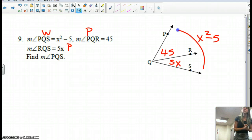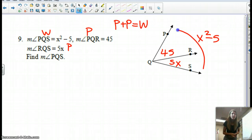So the equation that we're going to use, this is not found in your textbook, but it's what I talk about in class: part plus part equals whole. That's just the angle addition postulate, it's just a different way of putting it. So I'm going to say one of my parts, 5x, plus my other part, 45, equals my whole.